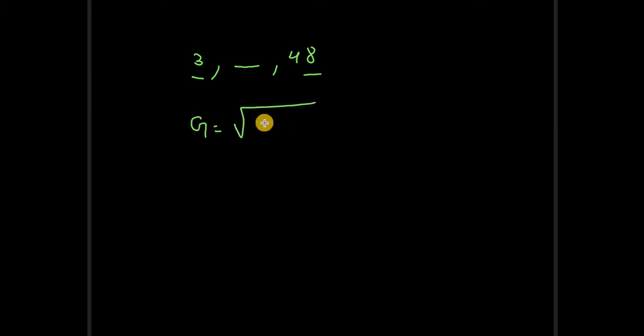Now let's find the geometric mean of 3 and 48. How can we find it? We can easily find it by the root of 3 into 48. As we have seen, geometric mean G equals root ab.